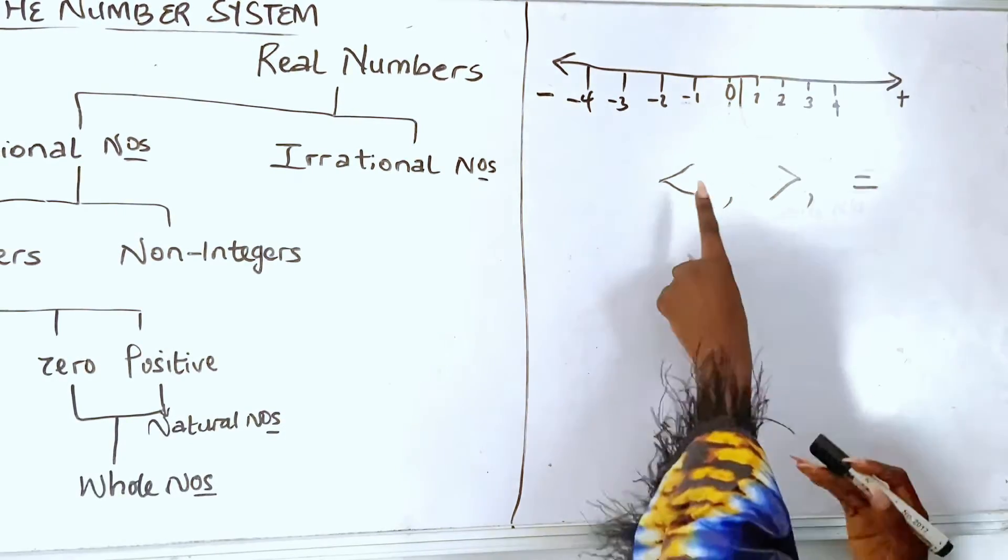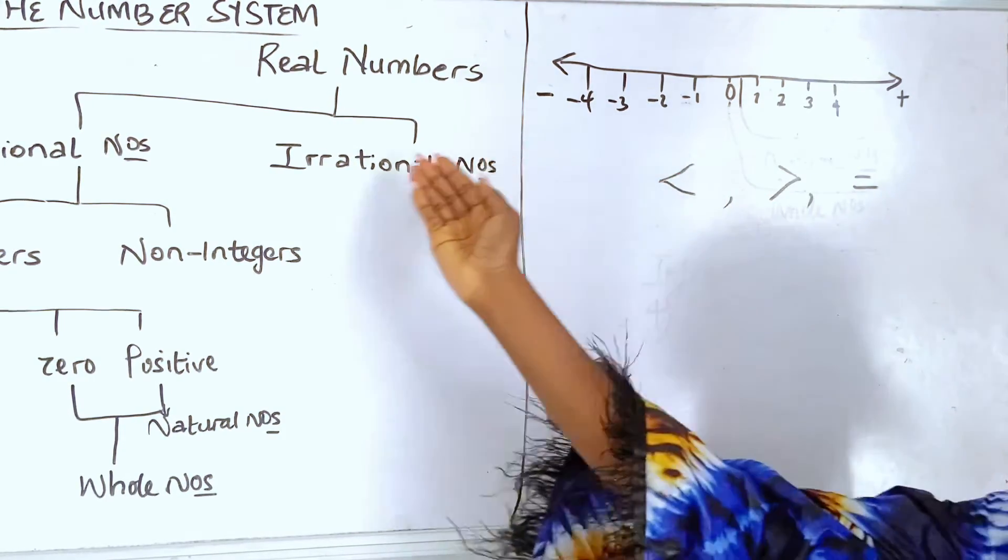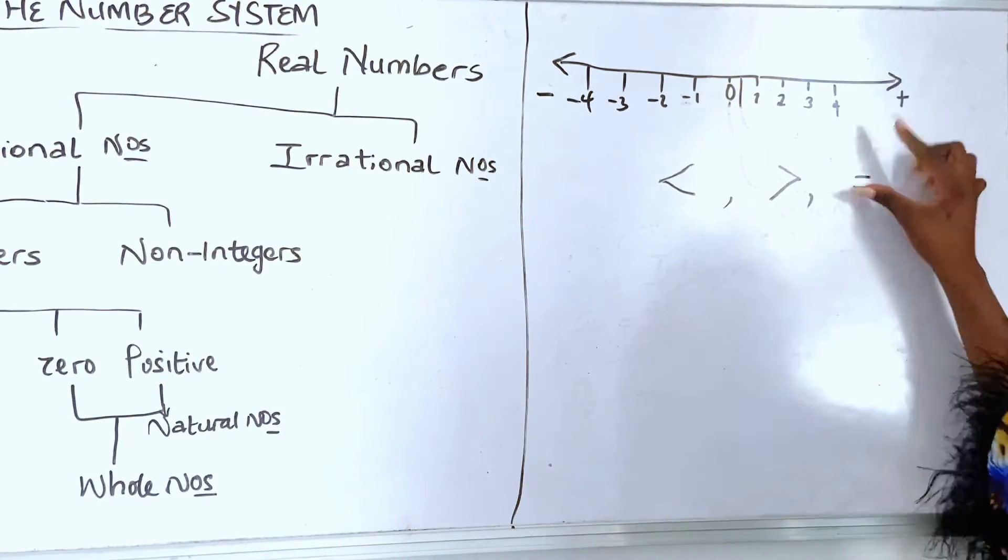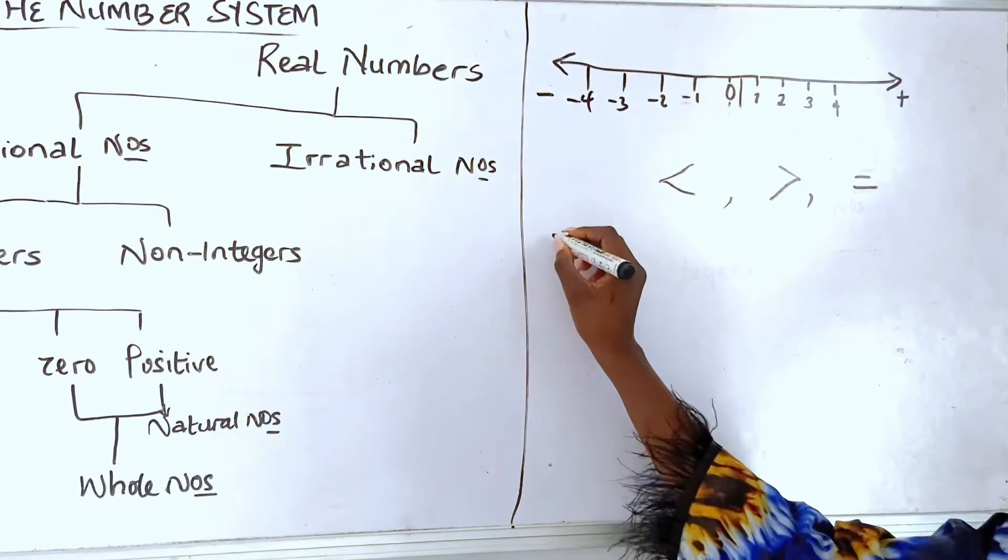So, this is what the symbols are. This is the symbol for the less than, greater than. Of course, you see, less than means numbers towards the side. Greater than means numbers towards the side. And equal to means it's equal. Now, let's give an example so we can make sense of it.